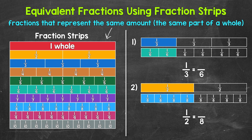Let's jump into number one where we have two fraction strips, and we need to figure out the equivalent fractions. We have one-third is equivalent to how many sixths. For the top fraction strip, we can see we have one whole rectangle divided into three equal parts. Each part is one-third of the whole, and only one part is shaded in, so this fraction strip is showing one-third.